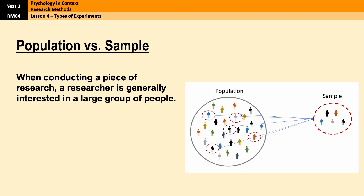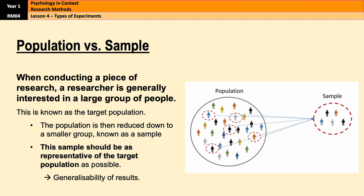In research we often want to study a large group of people and that group of people is called the population. A population refers to the entire group of individuals that are relevant to the research question. So for example if we're studying stress in students, the population might be all students in the UK. However, studying an entire population is usually quite impractical, so instead researchers are going to select a smaller group from the population, and that smaller group is called a sample.